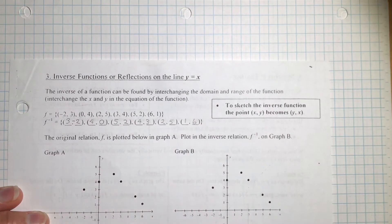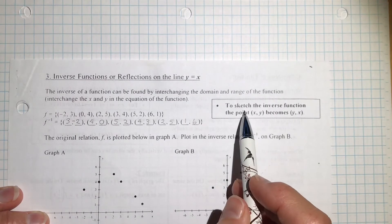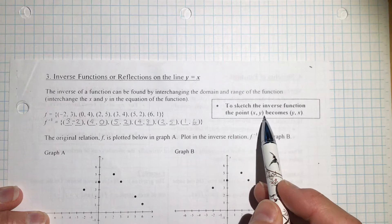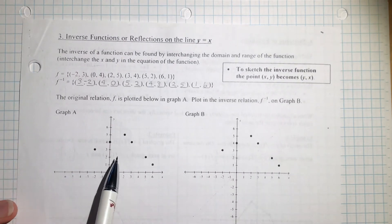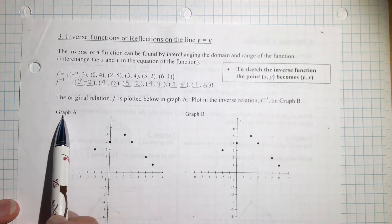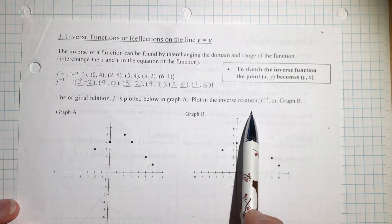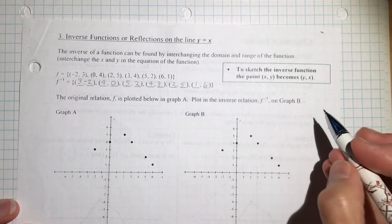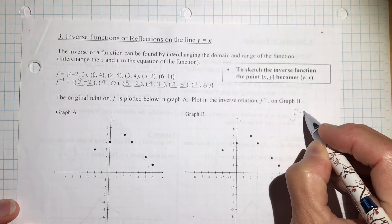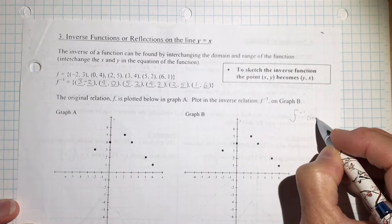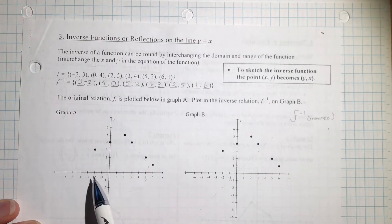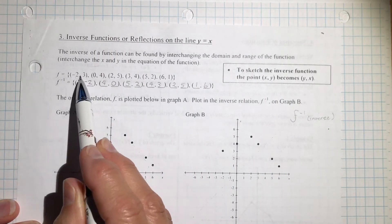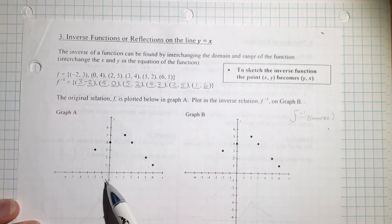Everyone can do that, and sometimes a teacher will even ask you that on a test. Now to sketch the inverse function, just like it says here, the points — we've switched them around: x becomes y, y becomes x. So here we have the original function f plotted on this graph. The question asks you to plot the inverse — note there's this little symbol f to the negative one, which means inverse. So to find the inverse of this function, the coordinates of these points match the ones we have up here, so you don't have to find them yourself.